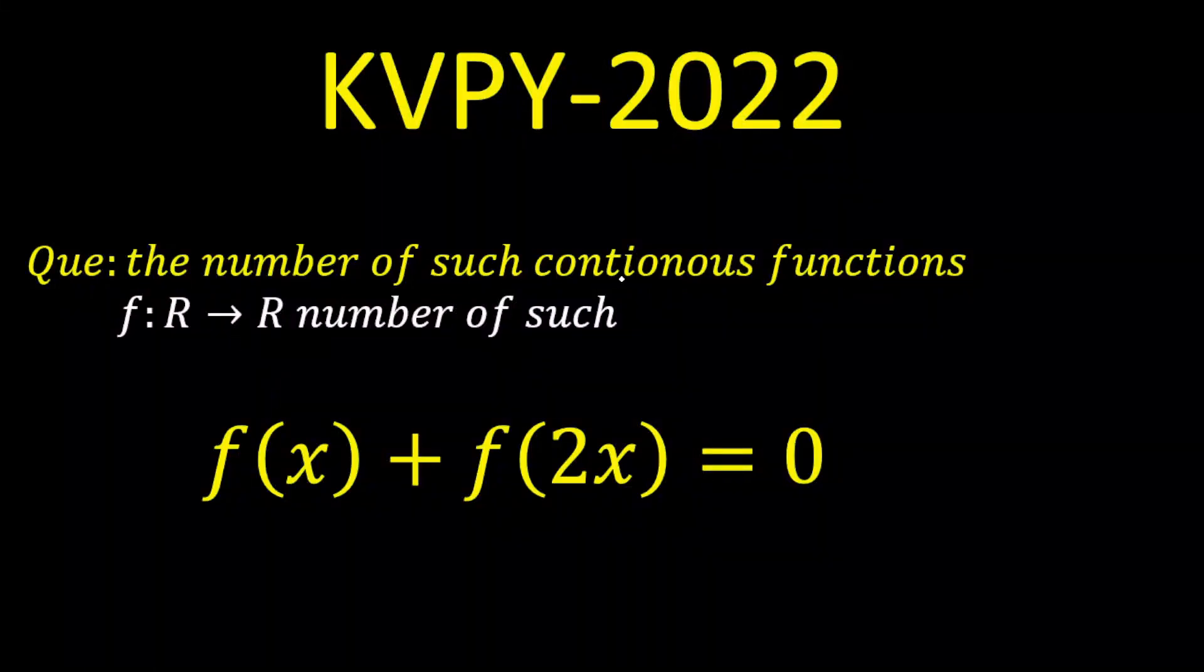The question is: the number of such continuous functions which is defined from R to R in such a way that the functional equation satisfies f(x) + f(2x) = 0.